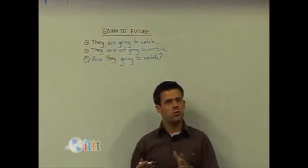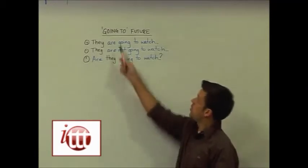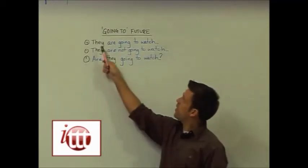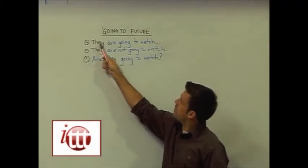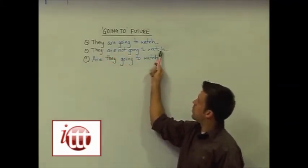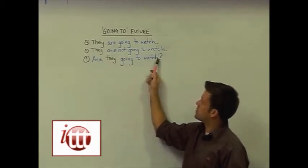Another way of expressing the future tense is by what's called the going to future tense. Here we have our examples: they are going to watch, they are not going to watch, and the question, are they going to watch?